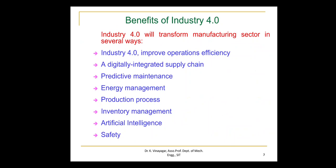Benefits of Industry 4.0. Industry 4.0 improves operational efficiency and also productivity, production quality, inventory management, asset utilization, time to market, workplace safety, and environmental sustainability. A digitally integrated supply chain enables companies to share data among customers, suppliers, and other supply chain partners. It offers integration of process control, management operations, business planning, and product lifecycle.